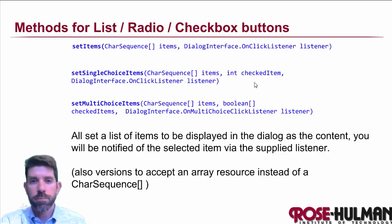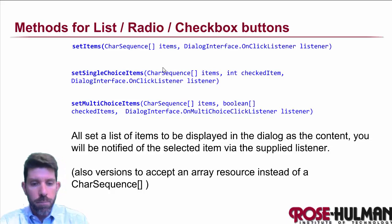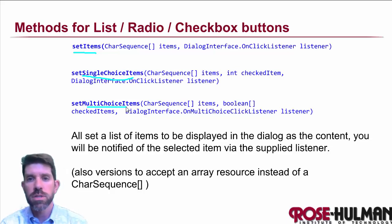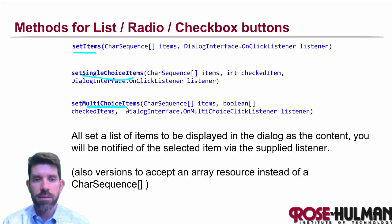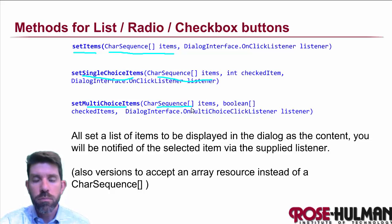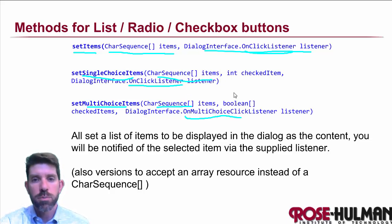We're going to use an AlertDialog, so most of what we'll do is very similar. Instead of setMessage, we'll use setItems, setSingleChoiceItems, or setMultiChoiceItems — all of which display a list of items. The first parameter for any of these is an array of CharSequence or strings. They all have a listener: an OnClickListener for setItems and setSingleChoiceItems, and a special OnMultiChoiceClickListener for setMultiChoiceItems.